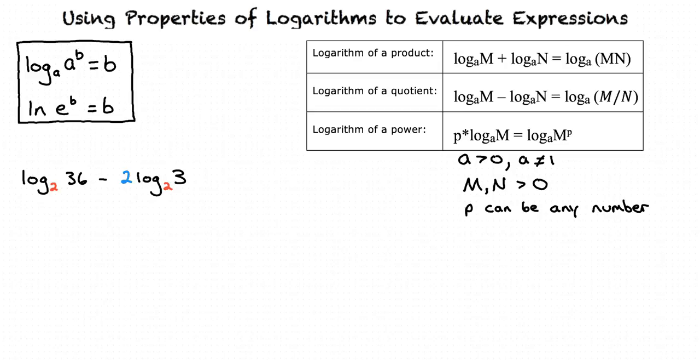Since there's a constant multiplied by the log in the second term, we can use the logarithm of a power property. Using this, we can simplify our second term to log base 2 of 3 squared. 3 squared equals 9, so now we have log base 2 of 36 minus log base 2 of 9.